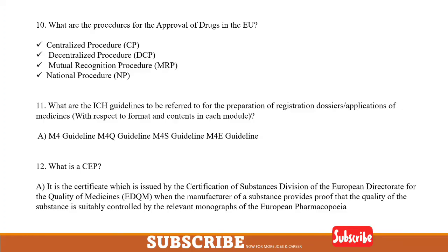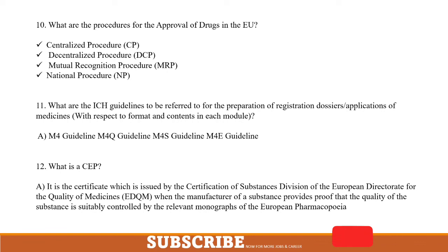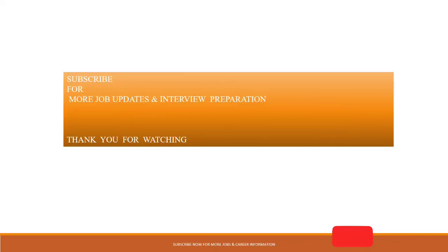What is a CEP? A CEP — Certificate of Suitability — is a certificate issued by the Certification of Substances Division of the European Directorate for the Quality of Medicines, when the manufacturer of a substance provides proof that the quality of the substance is suitably controlled by the monographs of the European Pharmacopoeia.